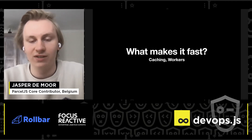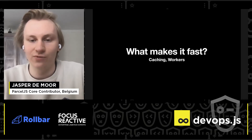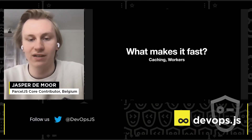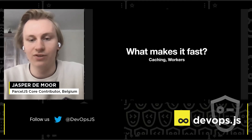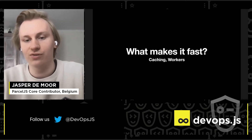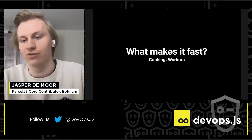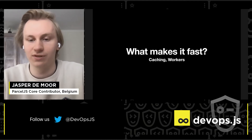What makes Parcel fast? Well, we use caching and workers. We cache every transpilation result from Babel and other transpilers like TypeScript, and we also use workers to parallelize that work between all your CPU cores.